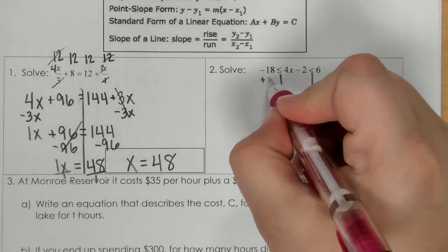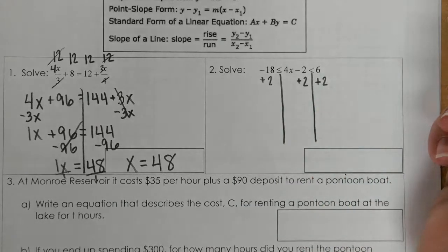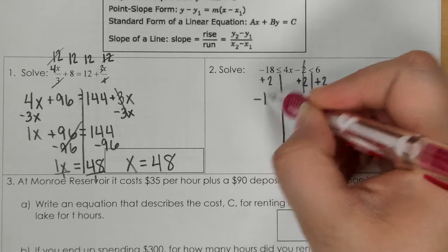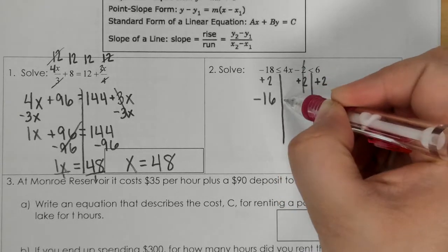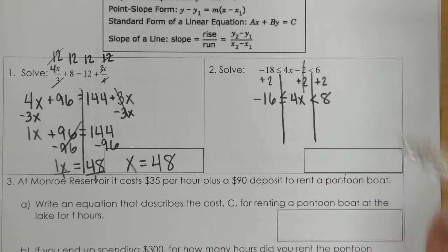So I've got to add 2, and then this cancels, and we have negative 16 less than or equal to 4x less than 8.